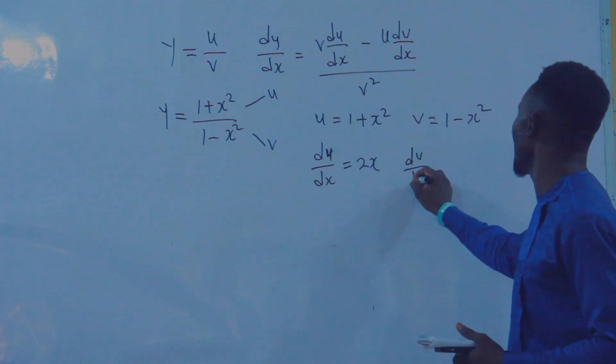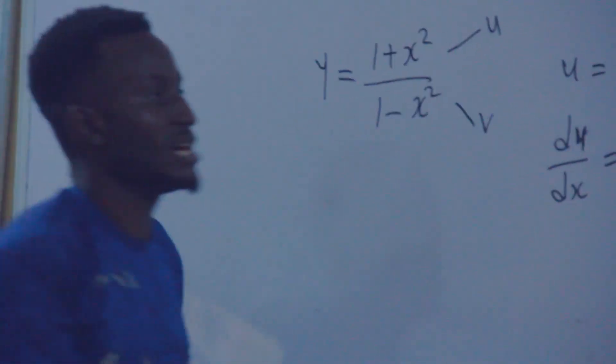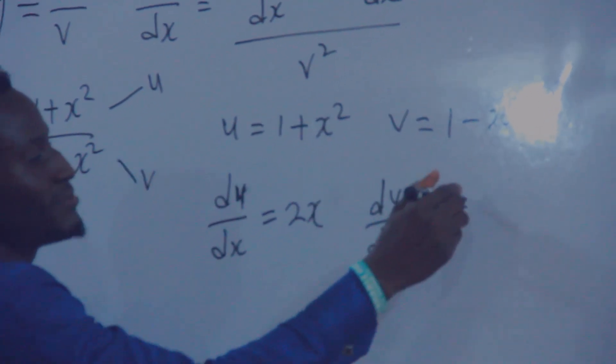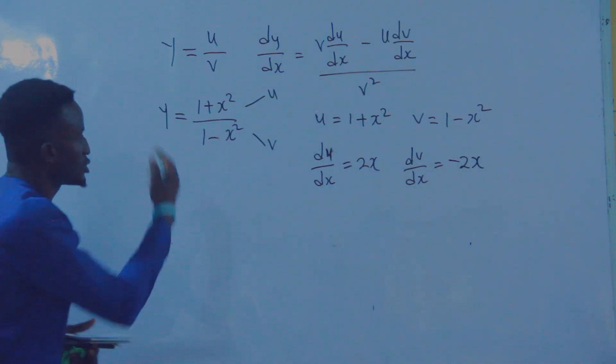Then what is dv/dx? The differentiation of one here will be zero, and this one will be 2 times minus 1, so that's minus 2x. Then let's go to the formula.